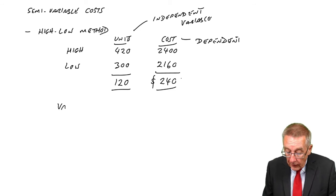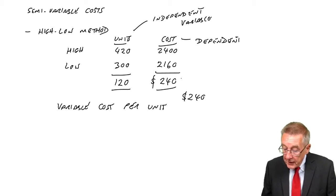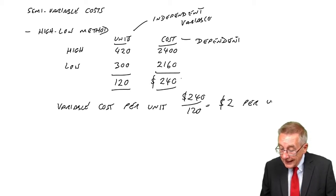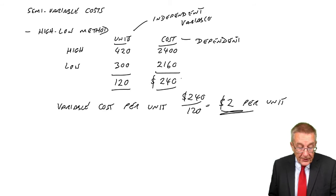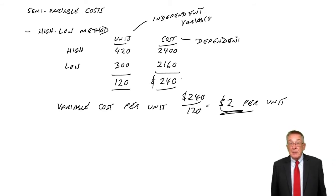And therefore, the variable cost per unit, 240 for 120 extra units is two dollars per unit. So there is the variable cost.